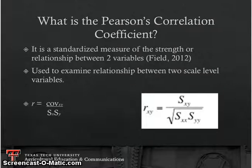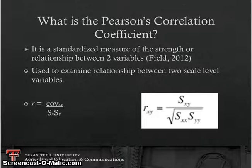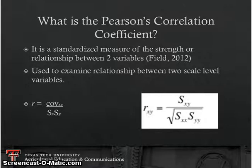If we have something that's nominal or ordinal we're going to have to use a phi coefficient, a Spearman rank, or maybe even a Kendall tau. So in order to use the Pearson product moment correlation we have to actually have something that's interval or ratio. If one of our variables is ratio we can actually compare it to something that is interval and vice versa, so they don't have to be exactly the same.